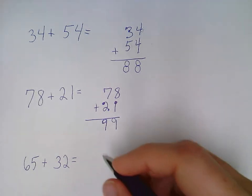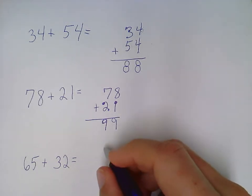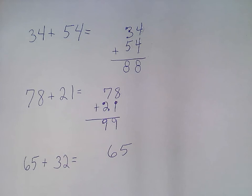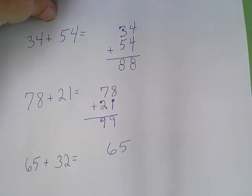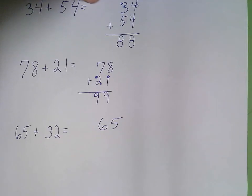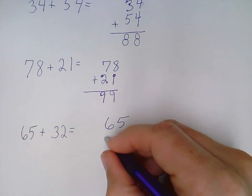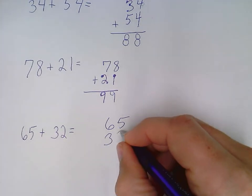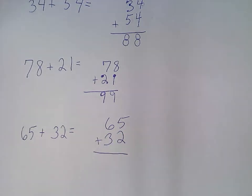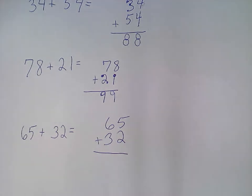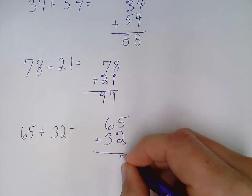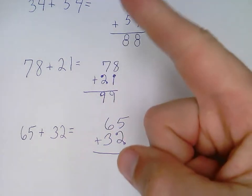And last but not least, 65 plus 32. Put down my first number 65, and I'm going to put down my second number right below that and make sure the place values are lined up. I'll put down 32, making sure the tens are lined up with the tens and the ones are lined up with the ones. Put my line that means equals, put my plus sign, and then I can add. 5 is the bigger number. I can use my touch dots: 6, 7, or grab the 5: 6, 7.